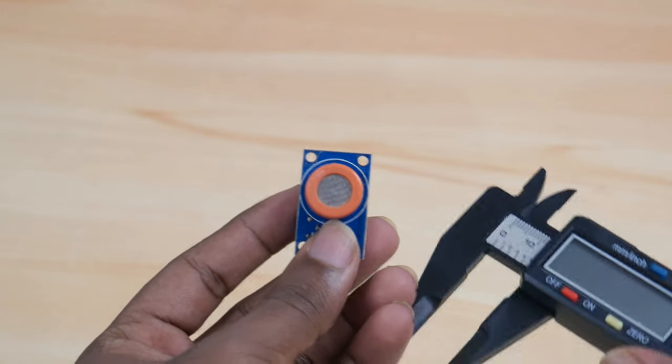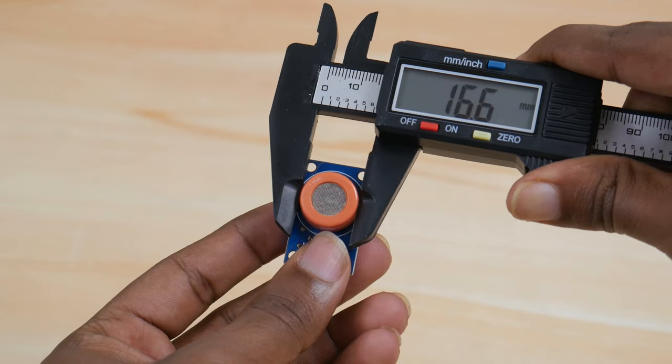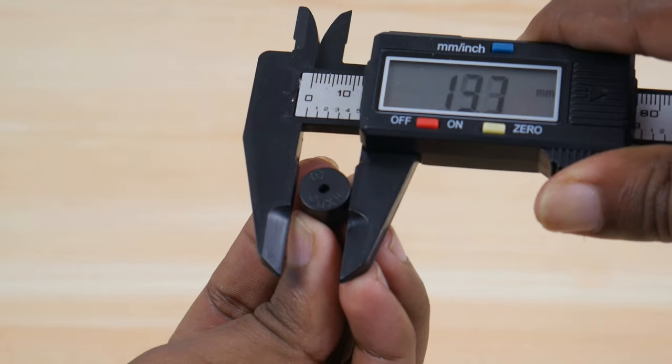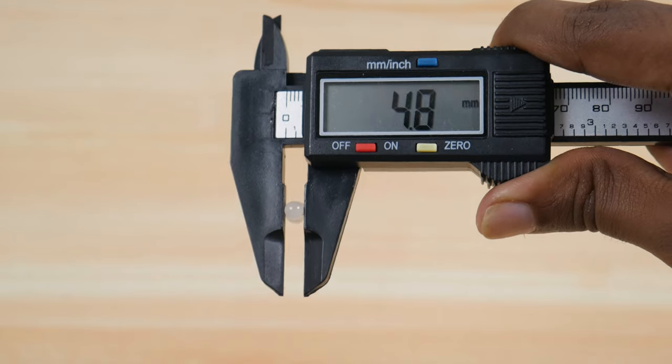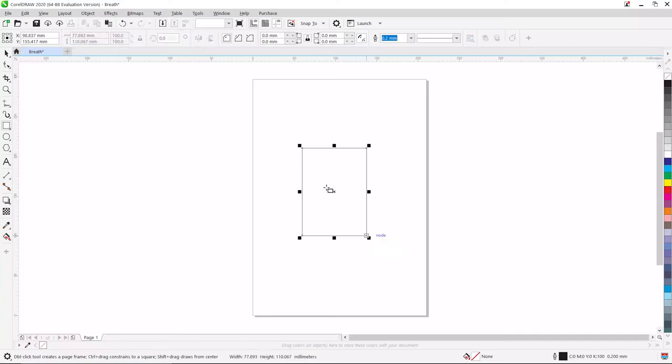Now we have to build a frame to make the device handy. Using calipers, take the measurements of LED, buzzer, pipe, and other components. Now let's open CorelDraw and start designing the files for laser cut.